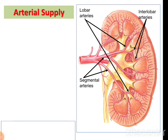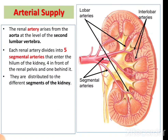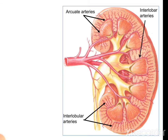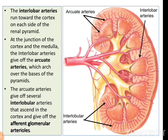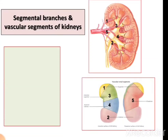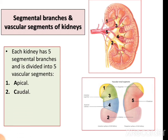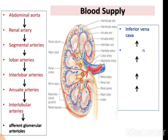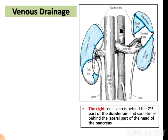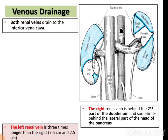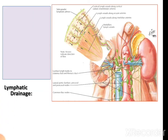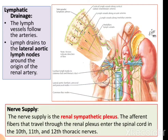The kidney is supplied by the renal artery, which is a branch of the abdominal aorta. This artery divides into various segmental branches supplying each segment of the kidney. The kidney has 5 segments in total: 4 on the anterior side and 1 on the posterior side. The segment names are apical, caudal, anterior superior, anterior inferior, and posterior. The venous drainage includes the right and left renal veins draining into the inferior vena cava. The lymphatic drainage goes to the lateral aortic lymph nodes, located on both sides of the aorta.